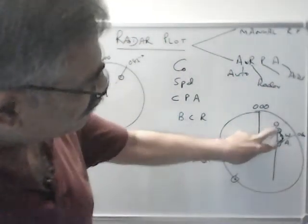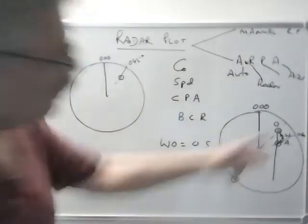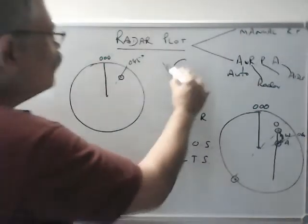And the distance WA, you can measure from divider and you get the ship's speed. So you got the course and speed.